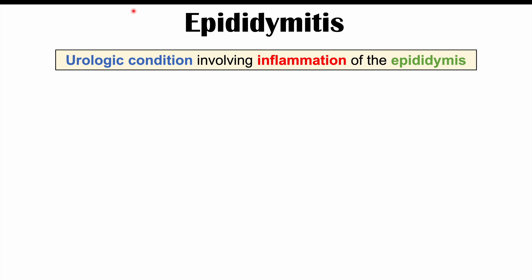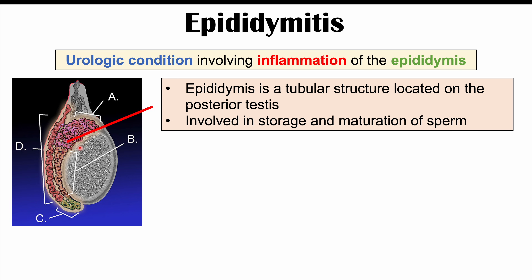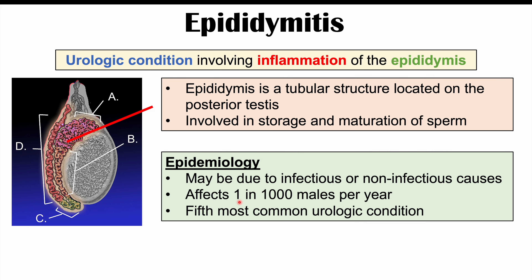Epididymitis is a urologic condition involving inflammation of the epididymis. The epididymis is a tubular structure located on the posterior testis, contained within the scrotum, and it's important because it's involved in storage and maturation of sperm. Epididymitis can be due to a variety of causes including infectious and non-infectious causes. Some bacteria can lead to infection of this tubular structure, whereas non-infectious causes like urinary reflux can lead to this condition as well.